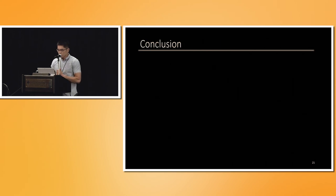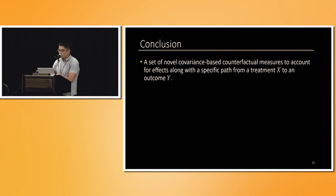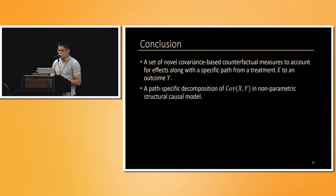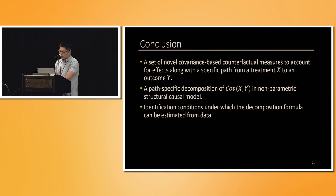In conclusion, we introduce novel covariance-based counterfactual measures to account for effects along specific pathways from a treatment X to an outcome Y. We develop a mechanism to allow, for the first time, the nonparametric decomposition of COV(X,Y) as a sum of different pathways in the underlying structural causal models. We further provide identification conditions under which the decomposition formulas can be estimated from passively collected observational data. Thank you.